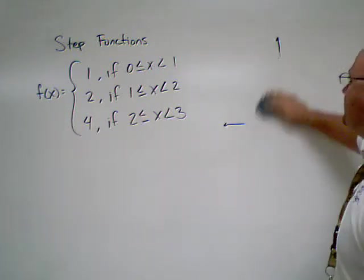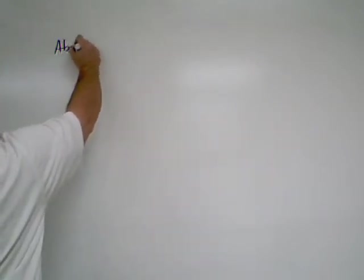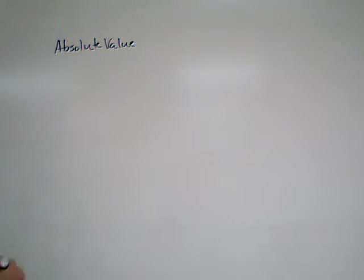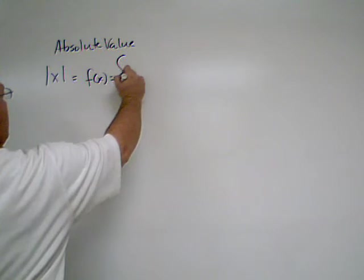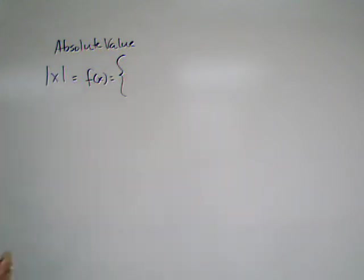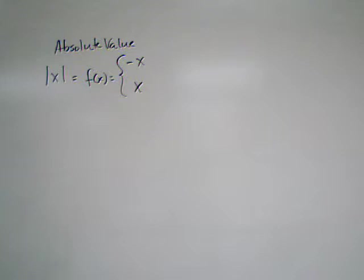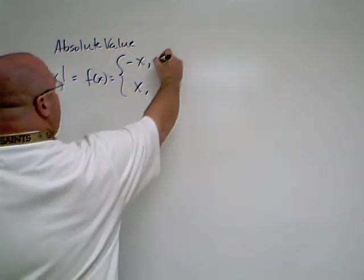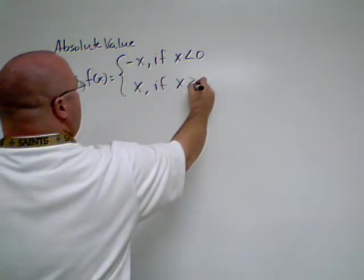Now we're going to move on to absolute value, which is going to be a little bit more difficult. Absolute value is actually a piecewise function in disguise. So when we have the absolute value of x, this is actually a piecewise function where f of x comes in two pieces. The first piece is the function negative x and the second piece is x. The key is where they are defined.